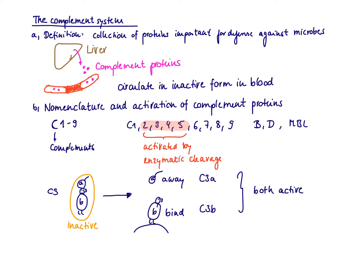In this video, I want to talk about the complement system. The complement system is a collection of proteins which are very important for the defense against microbes, particularly important for the defense against extracellular bacteria. They are produced in the liver, and then they directly get into the blood, so they are circulating in the blood in their inactive form. Once they are activated, they can help clear the pathogen.